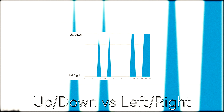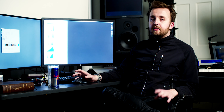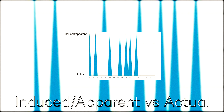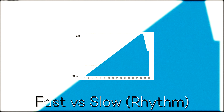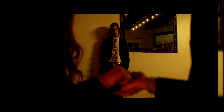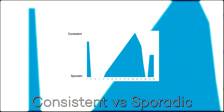The next graph is movement: left, right, up, down. You can have peaks in the film — sometimes it's up and down, which I feel is more intense and more unnatural as opposed to left and right, so that was the most intense variant to me. Underneath that is induced and apparent movement versus actual movement. And then underneath that is rhythm — I wanted the film to start off with a very slow, methodical rhythm and then have it build up and get faster and faster as the film goes on. And then underneath that is rhythm: sporadic versus consistent.